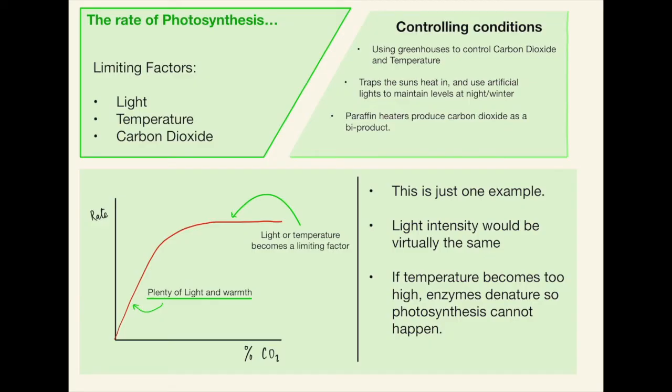Just one last point about those graphs on the bottom, if you can see that bottom bullet point on the right hand side. If the temperature becomes too high, enzymes denature so photosynthesis cannot happen. So if we were to repeat this graph and instead of percent CO2 on the x-axis we had temperature, you might not see the same kind of trend because if the temperature gets too high, the enzymes will start to denature and the rate will drop off completely.